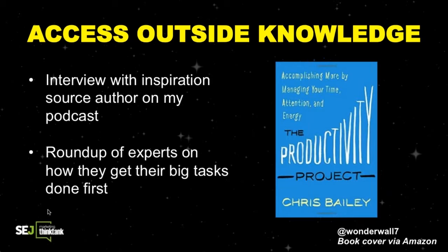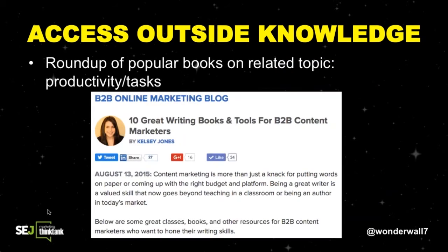Another thing you could do is a roundup of popular books or resources on a related topic. In our example, that would be productivity. I write for a B2B marketing blog, and instead of doing another strategy post one month, I did a roundup of great writing books and tools that B2B content marketers could use. It was one of the top-performing posts that month. People like lists of resources because they're easy to read and scan.